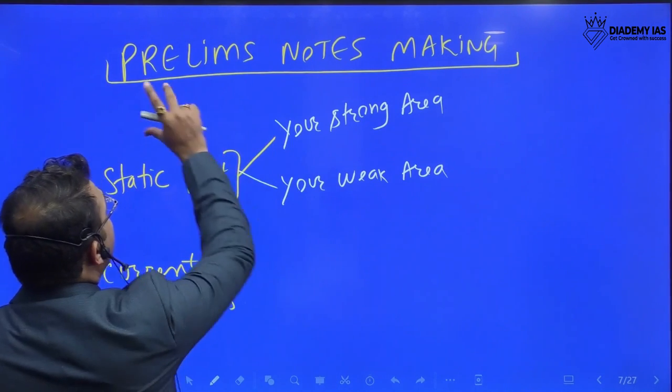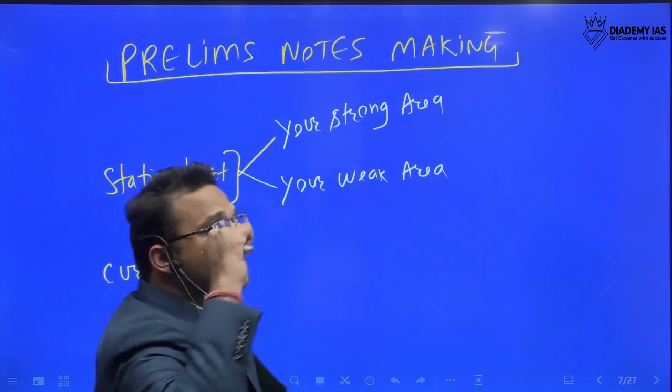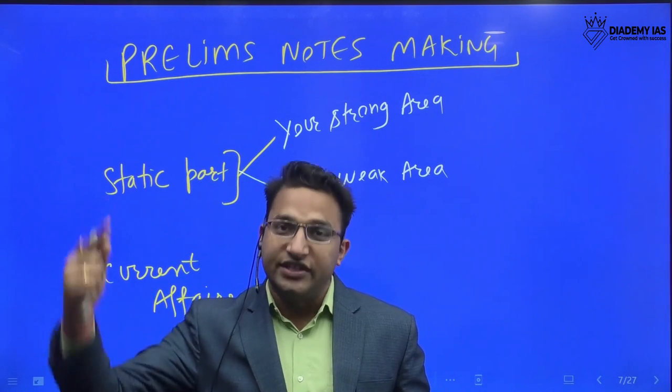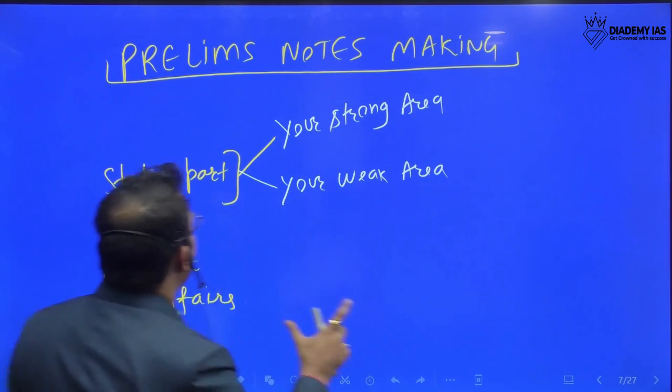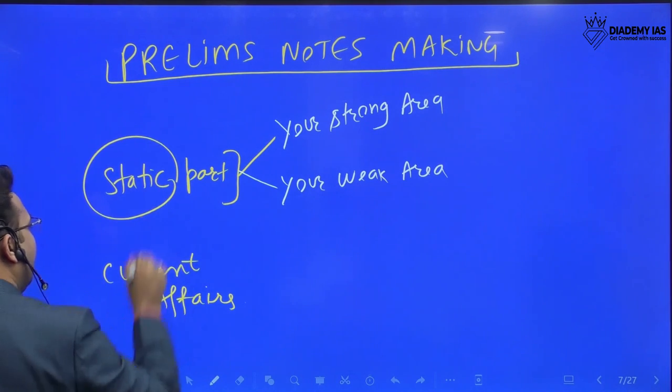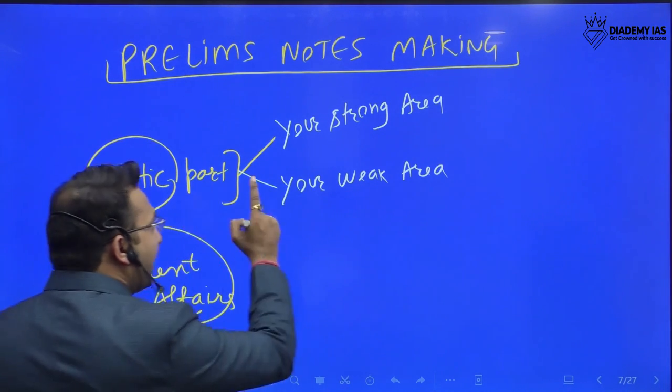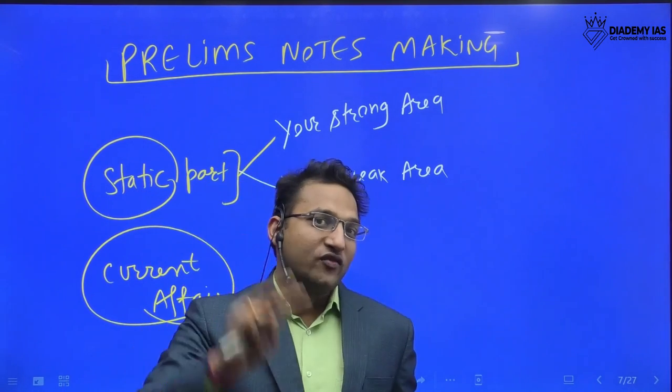Number one, in the prelims stage where syllabus is general studies and CSET, here we can divide the portion into static portion and the current portion. In the static portion, you have two kinds of subject.